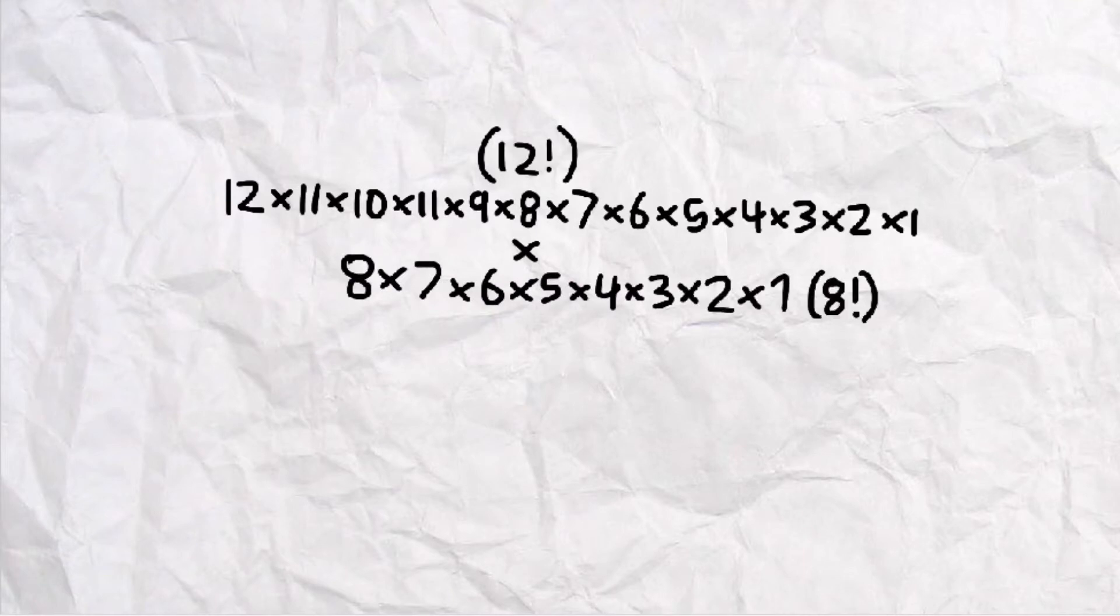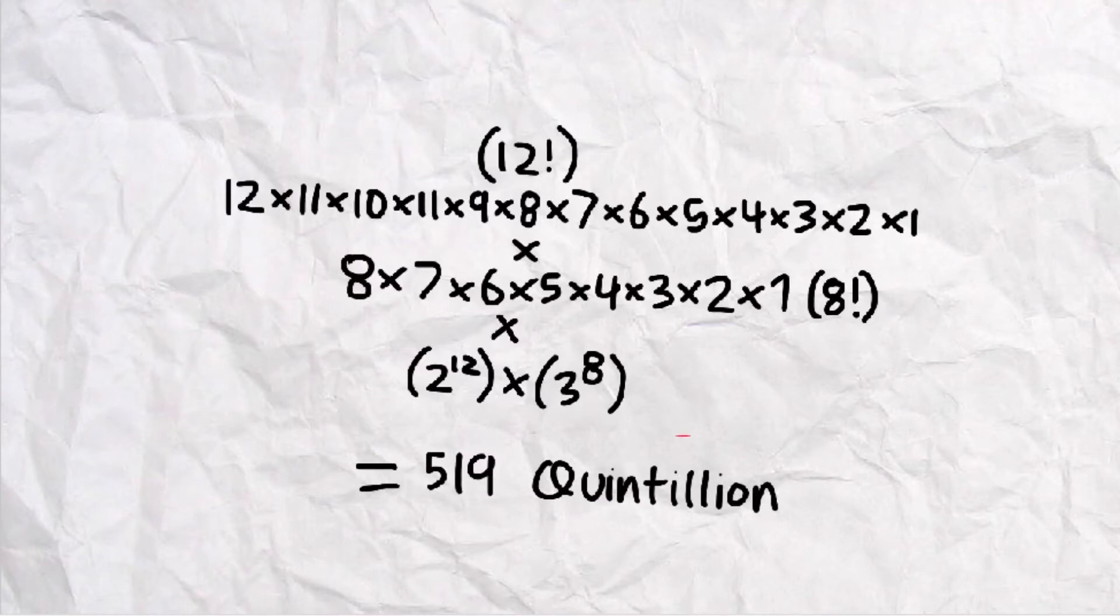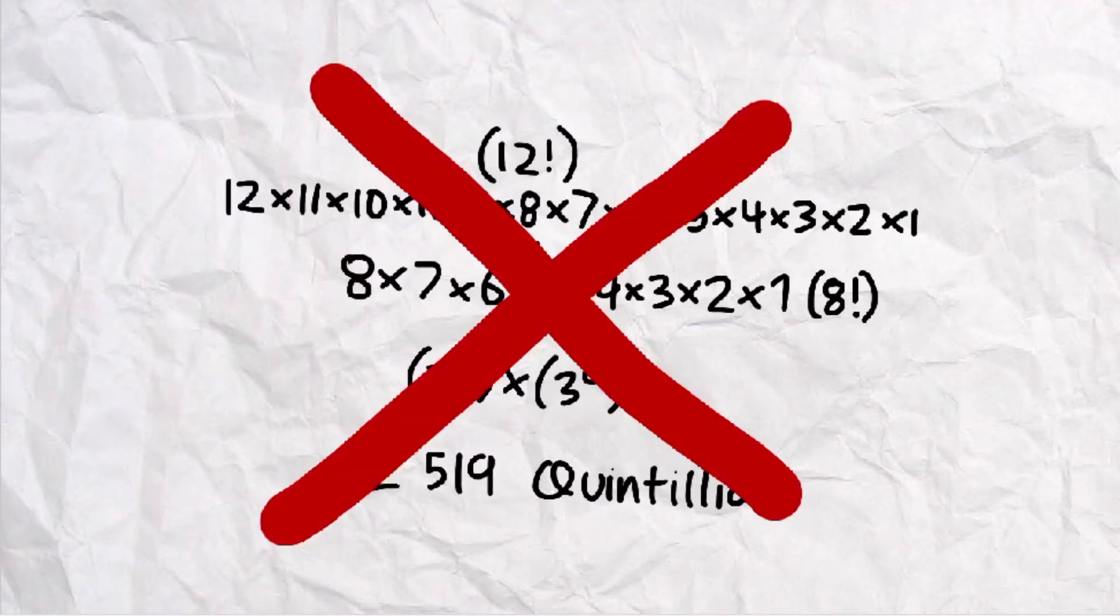So multiplying everything together, we arrive at a grand total of 519 quintillion. Now that's way off. But that's because there are some exceptions.